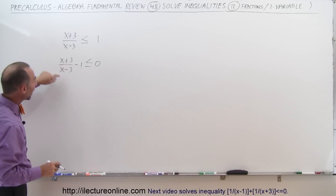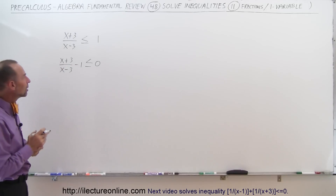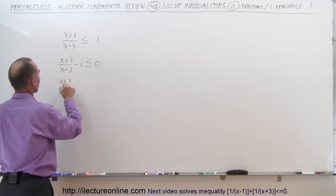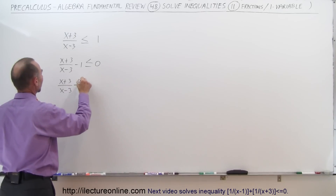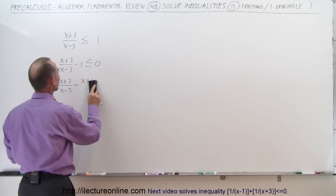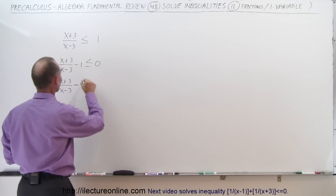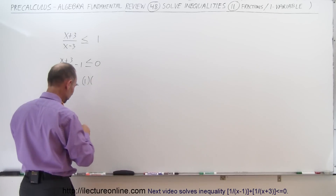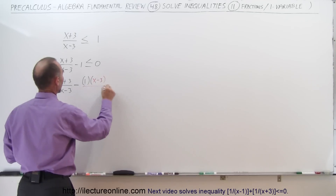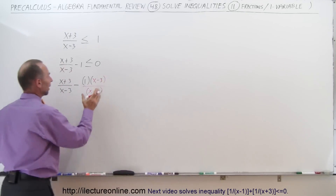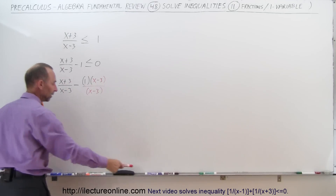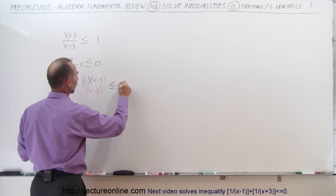Now we want to write this whole thing as a single fraction using a common denominator. We multiply the 1 by x minus 3 over x minus 3, so we now have a common denominator on the left side. That gives us x plus 3 over x minus 3, minus x minus 3 over x minus 3, less than or equal to 0.